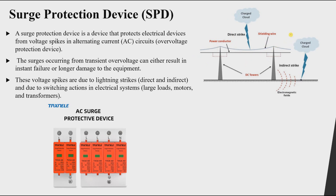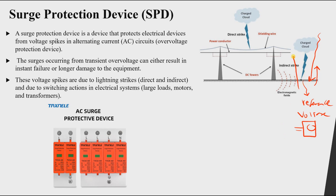For an indirect strike, instead of hitting the transmission line directly, the lightning hits the ground. When it hits the ground, it increases the potential of the ground. Remember, our ground is considered our reference voltage — normally equal to zero. When it hits the ground, this can lead to overvoltage on our equipment, even though it didn't hit the transmission line directly.